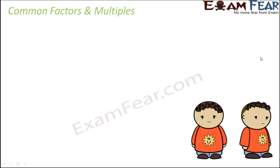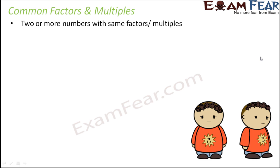You might be thinking, what does that mean? Common factors and multiples — these are basically those numbers with same factors or same multiples. So do you think that two numbers can have the same multiple? Yes, of course they can. Let us try to find the common multiples of numbers 2 and 3.